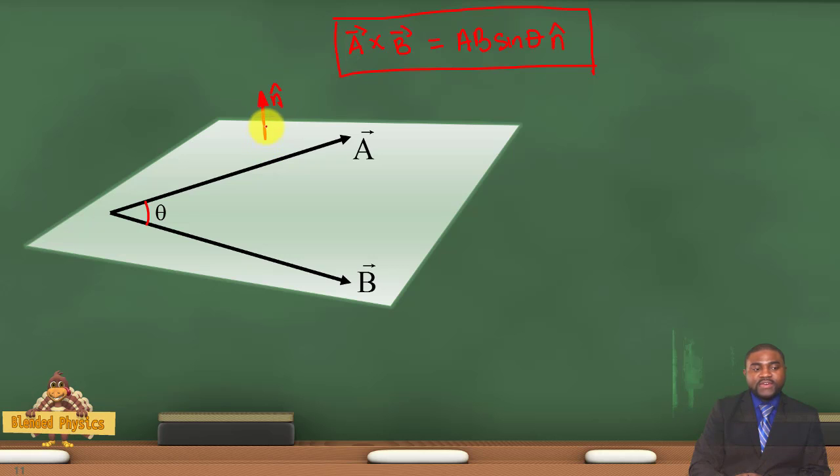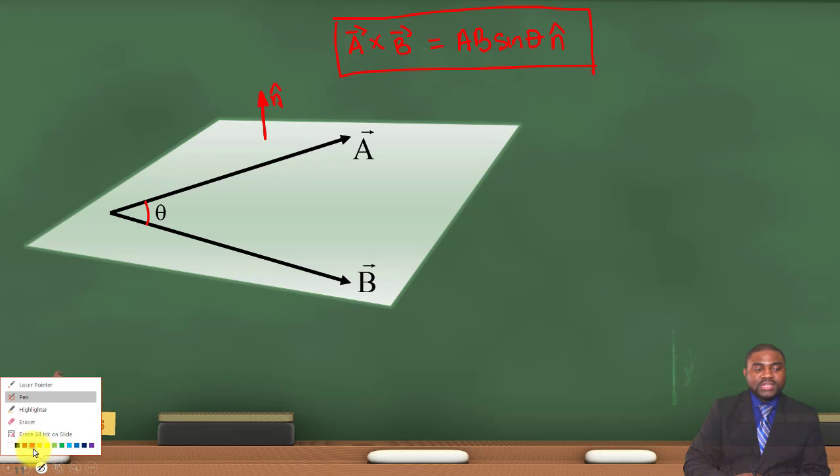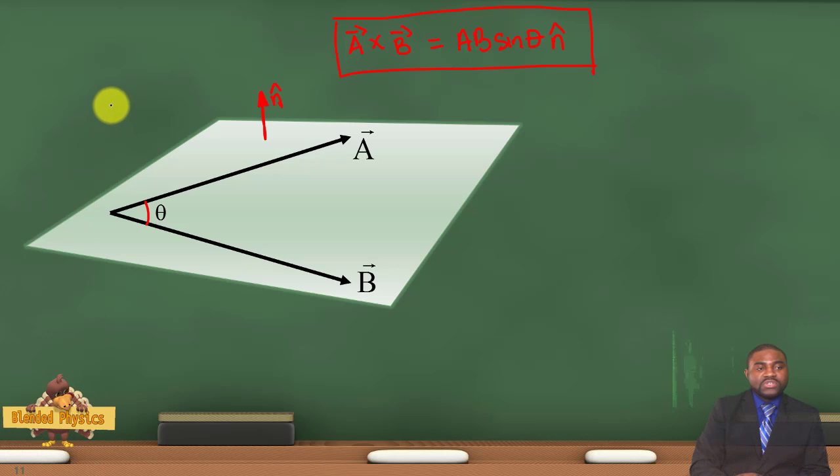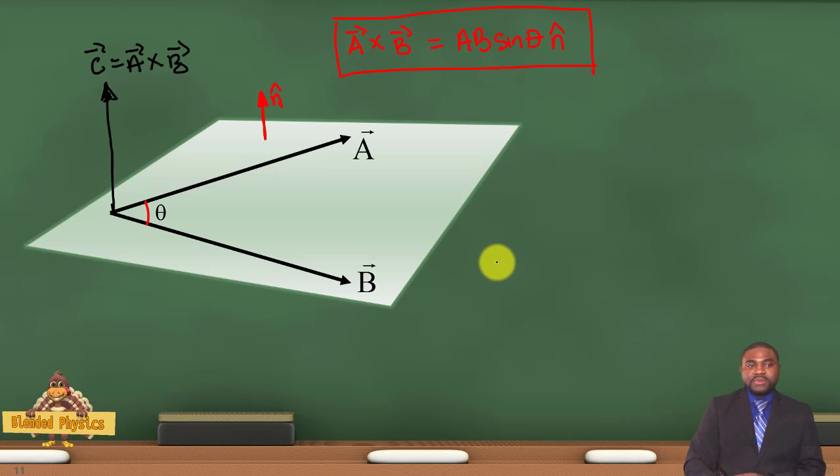This implies that the cross product between A and B is perpendicular to both A and B. So this will be C equal to A cross B. Now keep in mind that C is perpendicular to A, C is perpendicular to B.